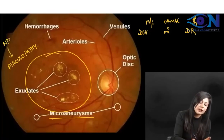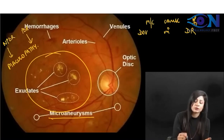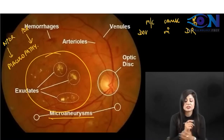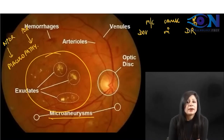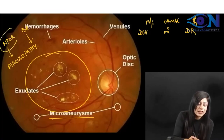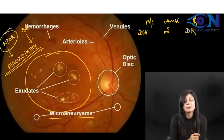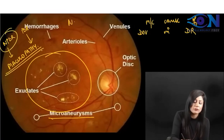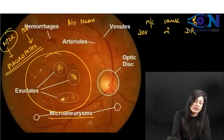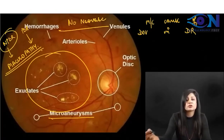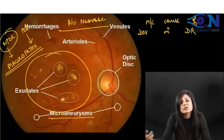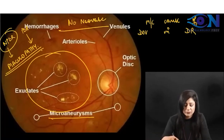This is a case of NPDR leading to maculopathy, because there is no proliferation and no neovascularization here. So this is NPDR which is leading to macular involvement.